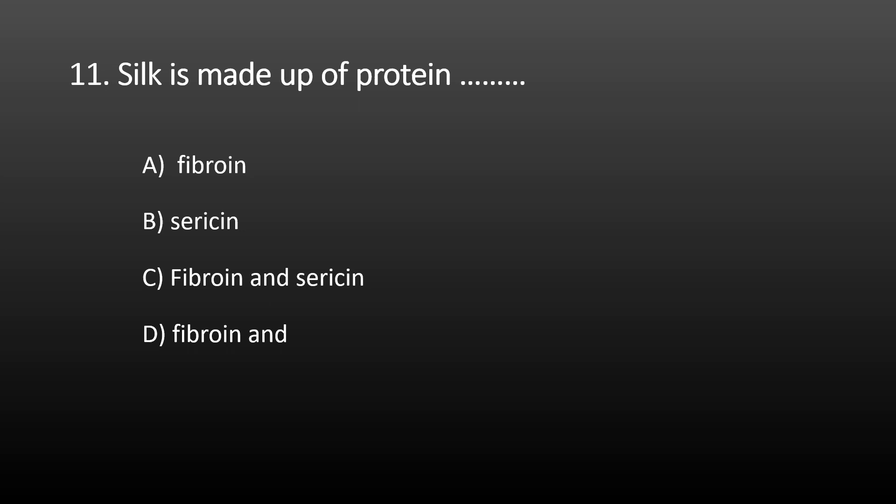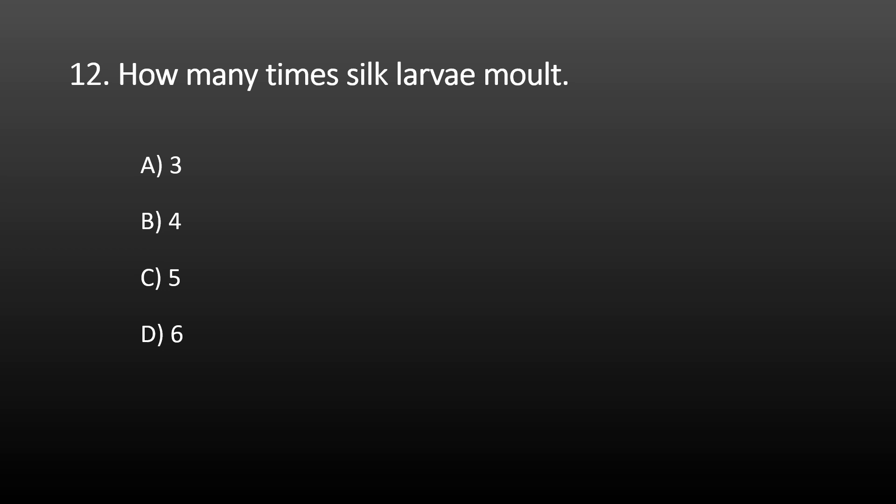Next MCQ: silk is made up of which proteins? Options are: A) Fibroin, B) Sericin, C) Fibroin and Sericin, and D) Fibroin only. The correct option is C, Fibroin and Sericin.